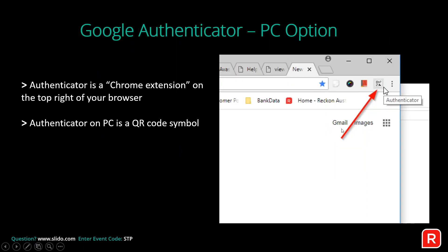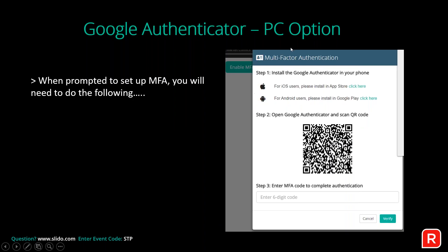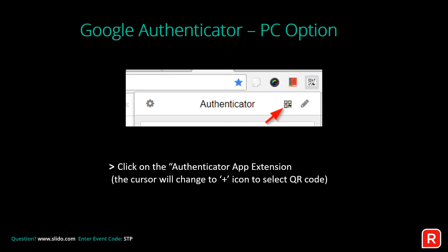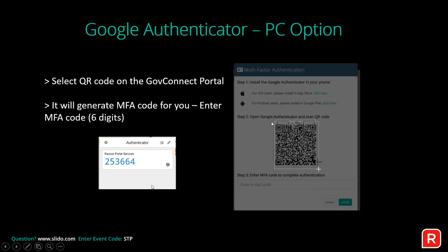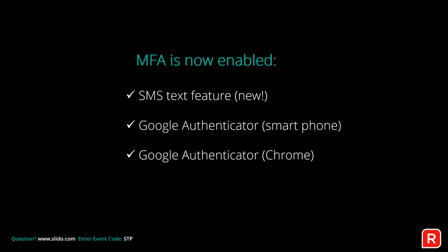Once you've installed the Chrome Authenticator extension and are prompted to set up MFA, click the QR symbol in Google Chrome and scan the QR code. Authenticator will generate a six-digit code — enter that to enable your multi-factor authentication. You just need to choose whichever of the three options suits you best.